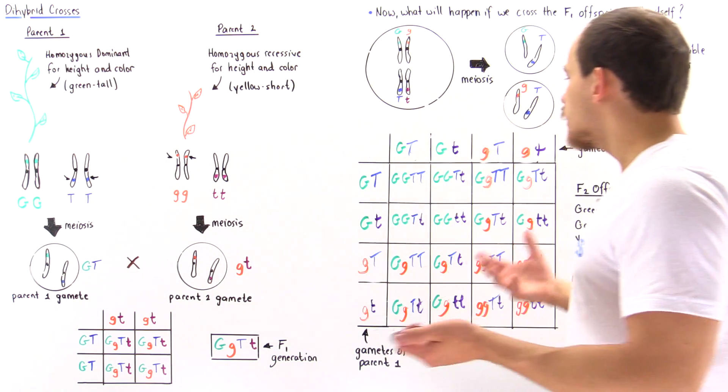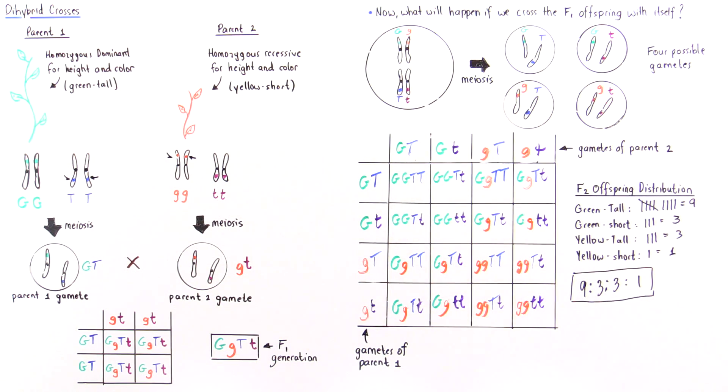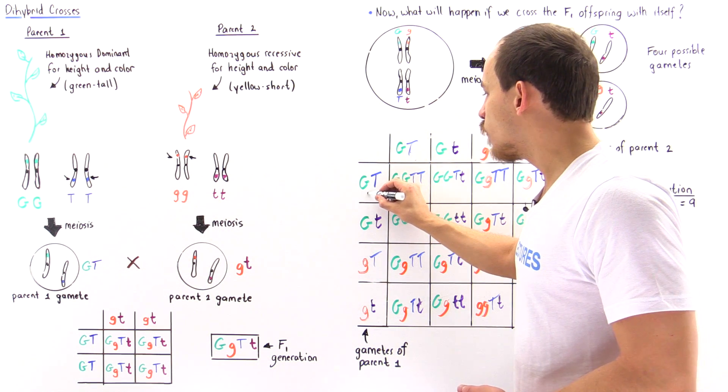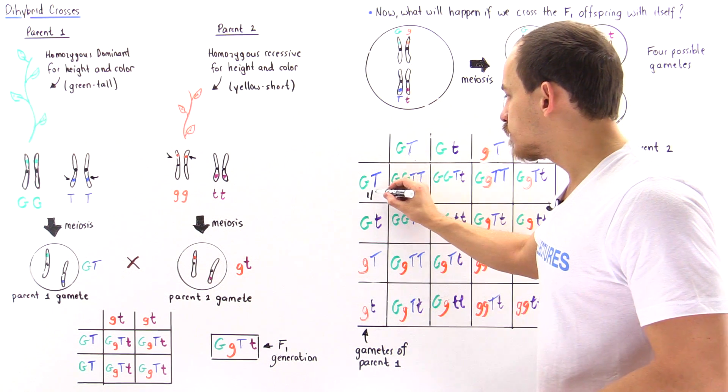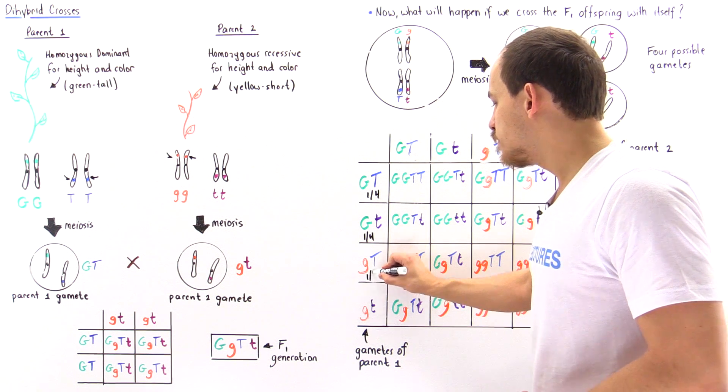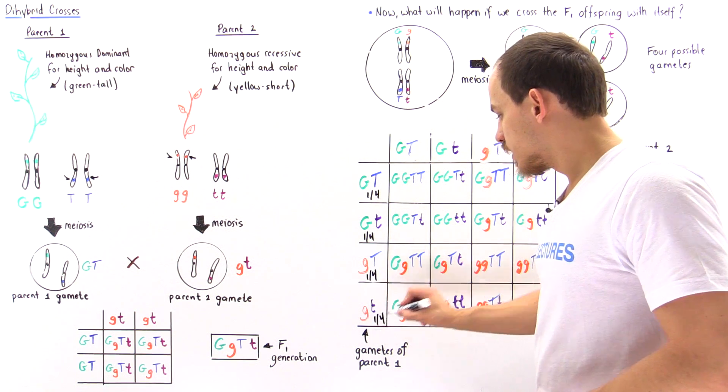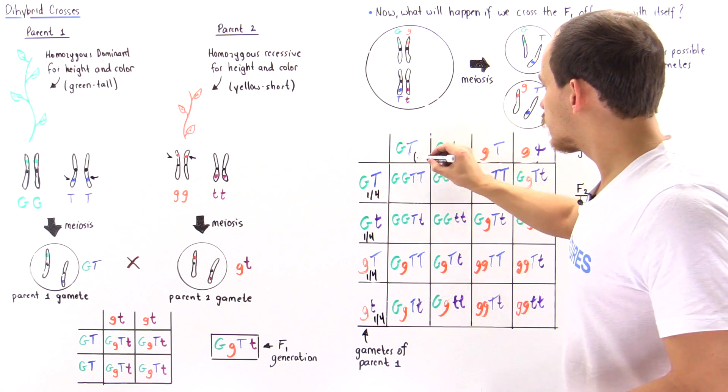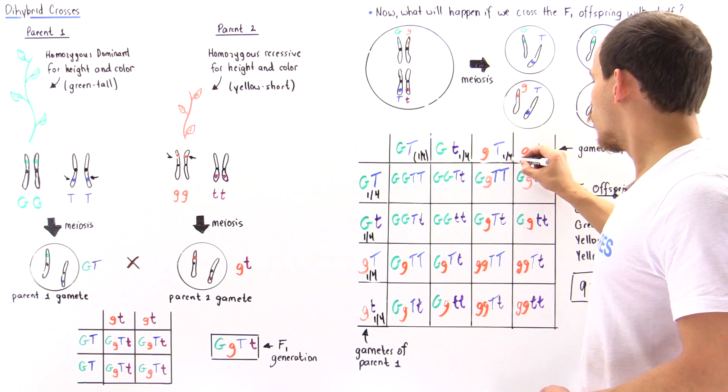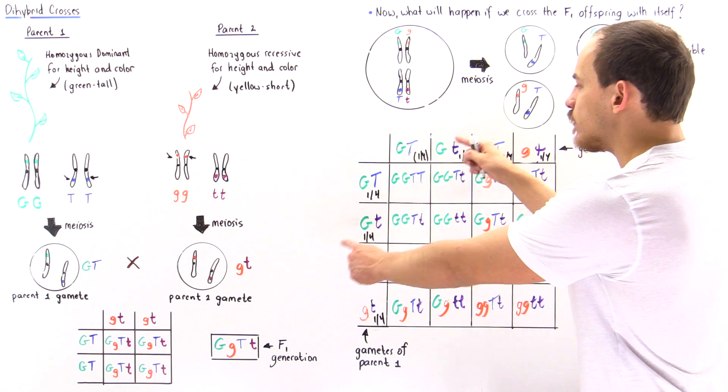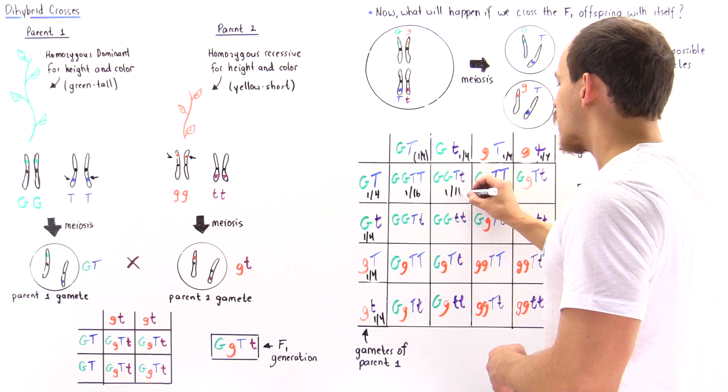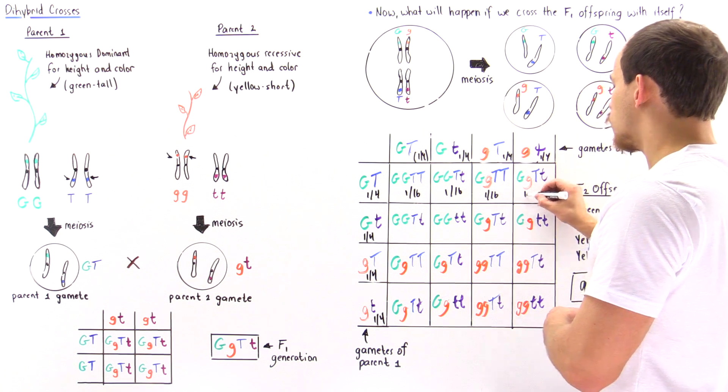Now if we want to talk in terms of probability, we can also talk in terms of probability. So remember the probability of each one of these gametes forming is one-fourth, because out of the four we have four different possibilities. So each one of these has a probability of taking place with this fraction. And here we have the same exact situation: one-fourth, one-fourth, one-fourth. And so every time we cross this, each one of these has a probability of 1/16. So 1/16 for each one of these.